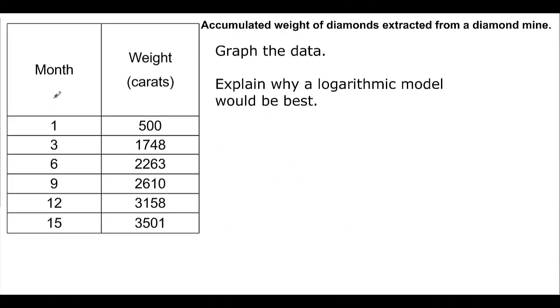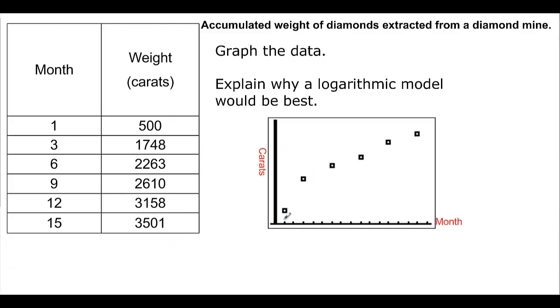Here we have accumulated weight of diamonds extracted from a diamond mine. We have these months and these carat weights. Go ahead and put those in there and graph it. And then we'll talk about why it should be a logarithmic model. Here's my graph. If you look at it, it looks like I might be able to fit in a logarithmic. It increases rather quickly but then it kind of starts to level off. It's not exponential because it's going the wrong direction. It's curving the wrong way for an exponential.